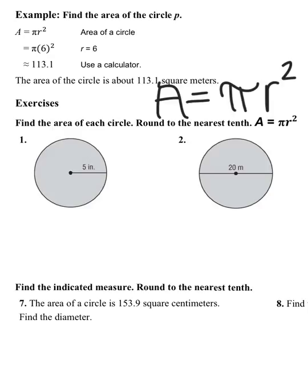We'll get into question number one. It wants the area of the circle, rounded to the nearest tenth. Our radius is 5, so I'm going to write that down, radius equals 5.